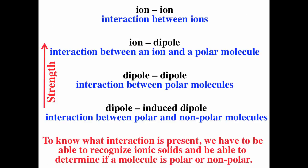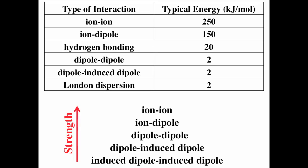To understand the strength of intermolecular forces, you need to recognize whether you're dealing with an ionic compound or a molecular compound, and if it's a molecule, whether it is polar or nonpolar. We can give typical energies for these interactions: ion-ion is about 250 kJ/mol, ion-dipole about 150 kJ/mol. Hydrogen bonding is about 20 kJ/mol, while dipole-dipole, dipole-induced dipole, and London dispersion are all about 2 kJ/mol.